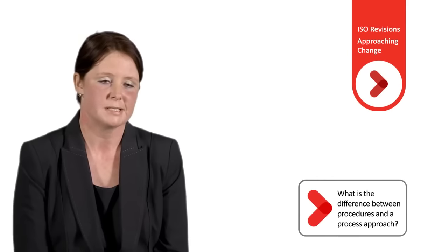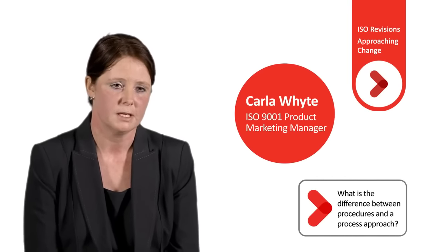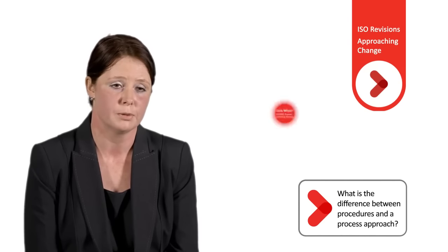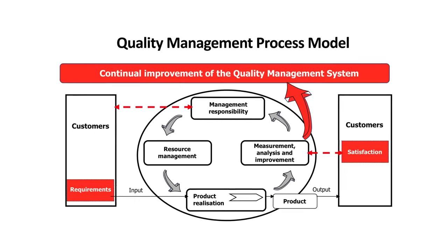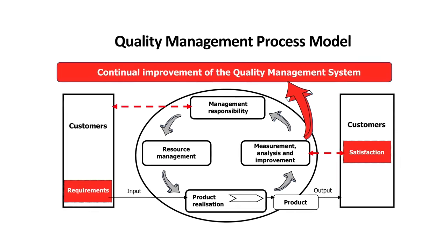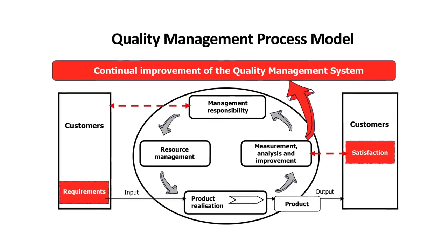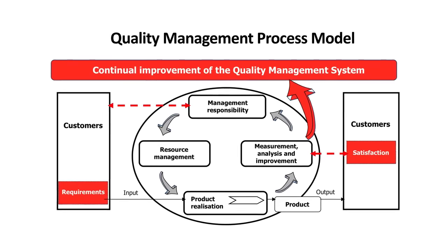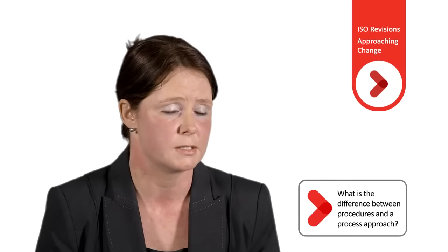A procedure would define the activities in a silo perspective, whereas a process would define the inputs and expected outputs of the activity. Processes would also be classed as a high-level view, where procedures detail a step-by-step approach, although potentially not as detailed as a work instruction. A process approach would also put more emphasis on the skills, knowledge and competence of the individuals.